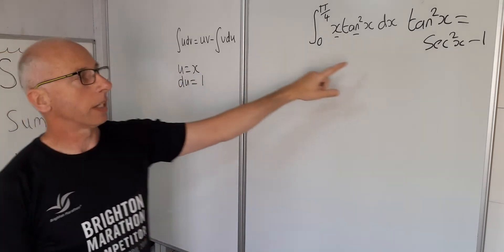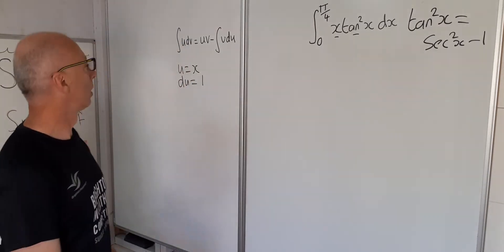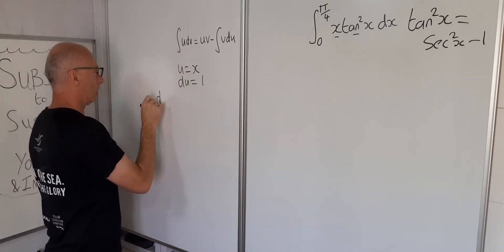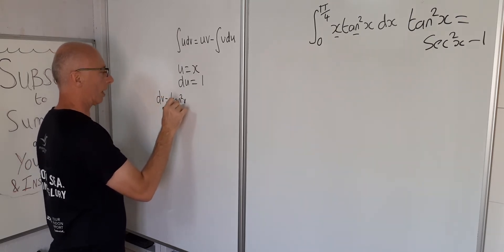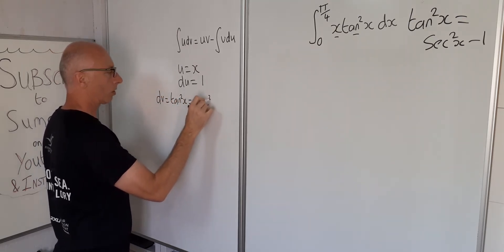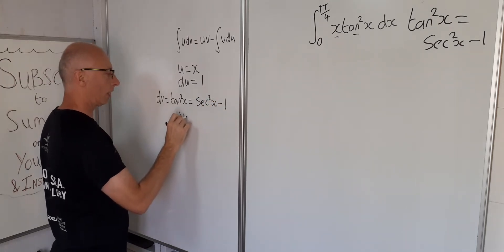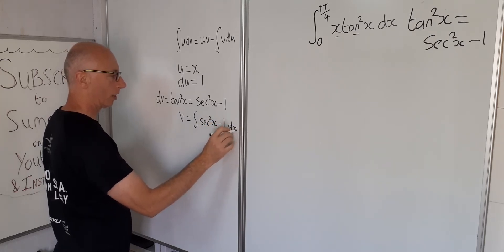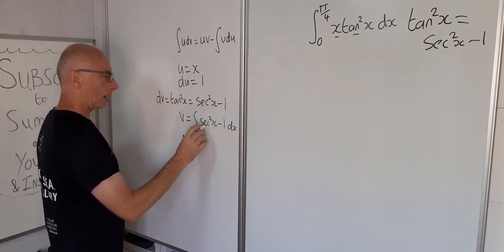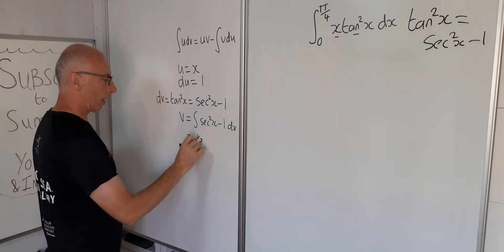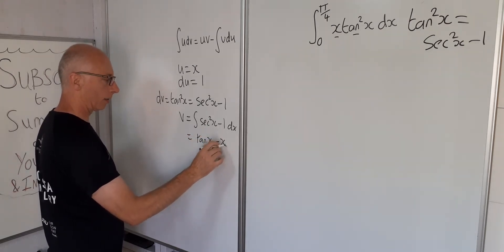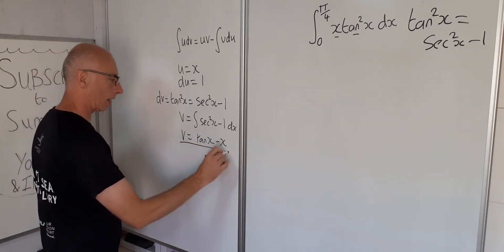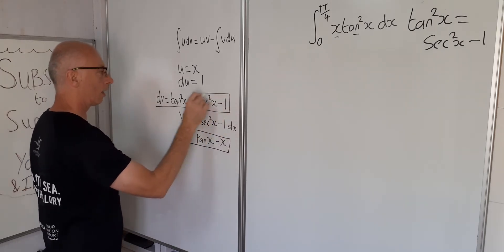Now for dv, we're going to let that equal secant squared x minus 1. So v equals the integral of secant squared x minus 1 with respect to x, which gives us tangent x minus x. So that's our dv and our v established.